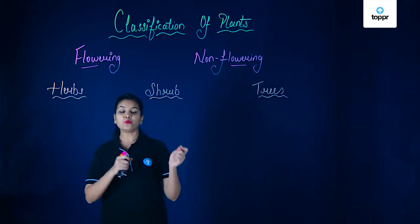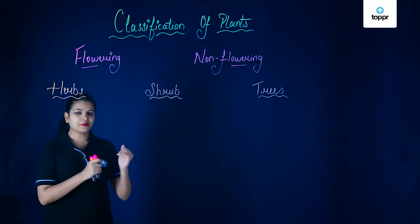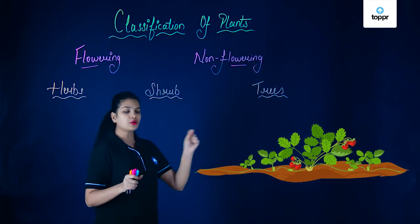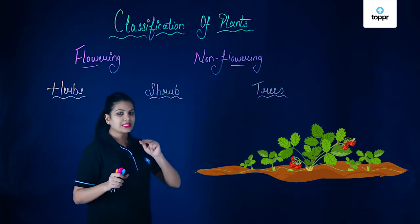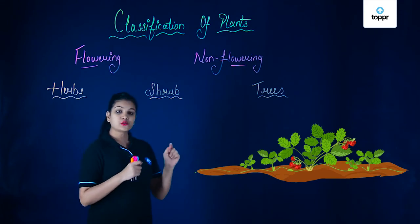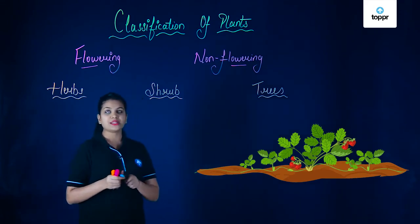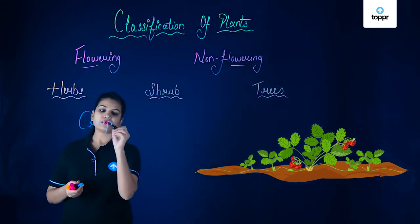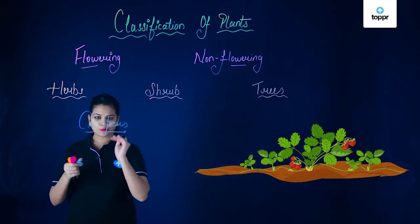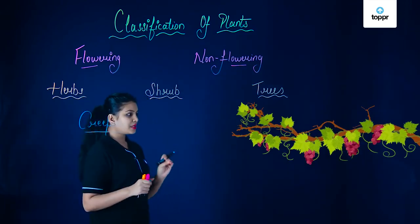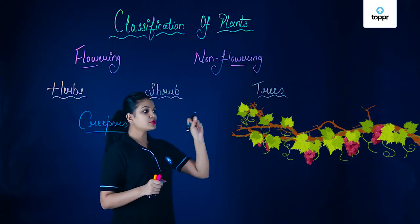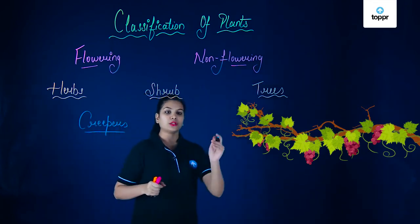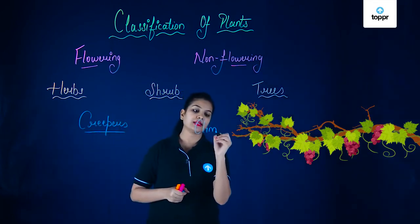There is a third way of classifying plants. Some plants creep on the ground, basically following the surface — for example, strawberry. Such plants are called creepers. In contrast, there are some plants which climb up to a support, like grapevine. Since they are climbing, they are called climbers.